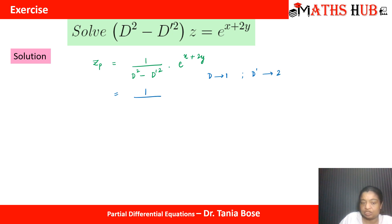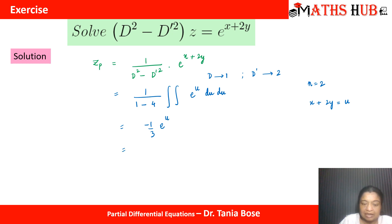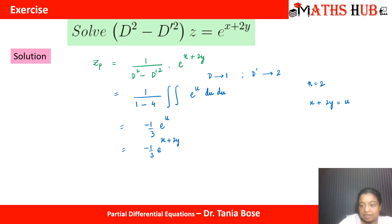When you replace D with 1 and D' with 2: 1 squared is 1, 2 squared is 4, so the denominator gives 1 minus 4 equals negative 3. Now D² minus D'² is a homogeneous function of degree 2, so you integrate twice. Substitute x plus 2y equal to u, so the function becomes e^u integrated twice. The integration of e^u is e^u itself, so after integrating twice and putting back u, you get (1/−3) times e^(x+2y). Wait — the denominator is 1 minus 4 = −3, so zp equals −(1/3)e^(x+2y).